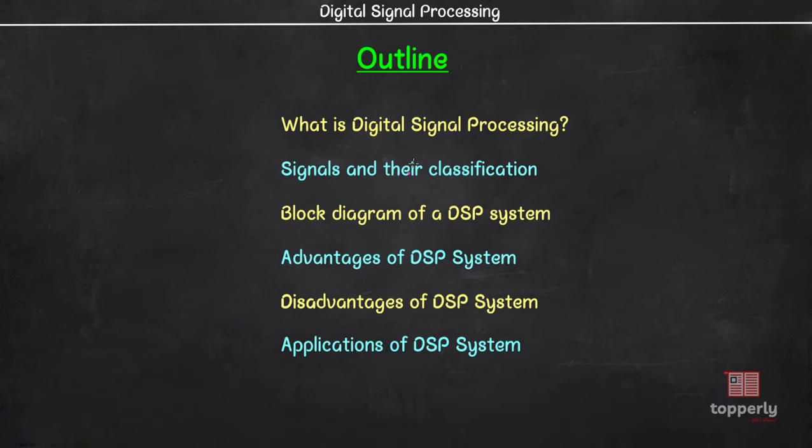Here is the outline of this video. First, we will see what is meant by Digital Signal Processing, then we talk about signals and their classifications, later we will see the block diagram of a DSP system, followed by the advantages, disadvantages and applications of a DSP system. So, let's get started.